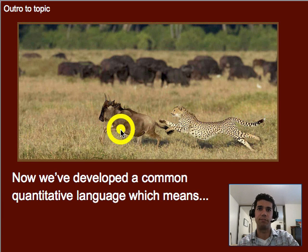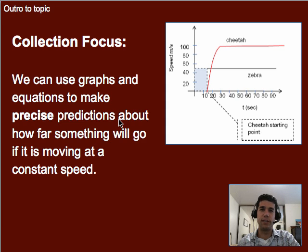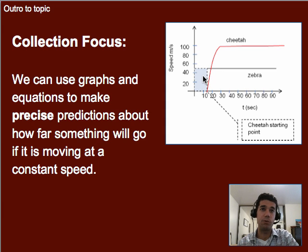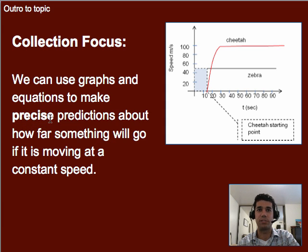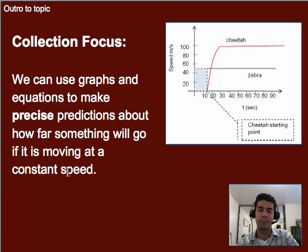Actually, I think those are water buffalo and this is a wildebeest. Which brings us to the collection focus: we're really focusing on graphing, so we can use a graph to figure out exactly when a cheetah will catch up without doing calculations per se. But whether we're using graphs or calculations, that allows us to make precise predictions about how far something will go at a constant speed, or when two things will be at the same location.